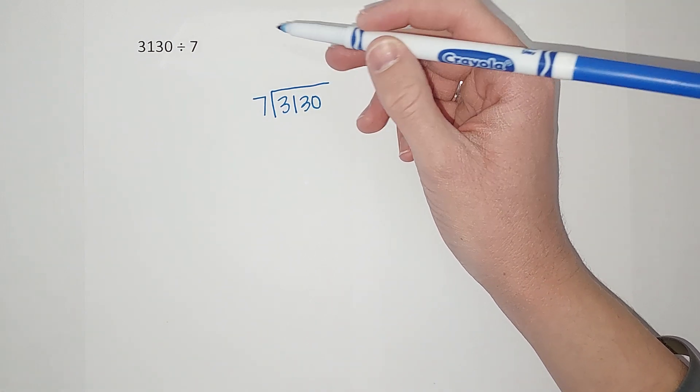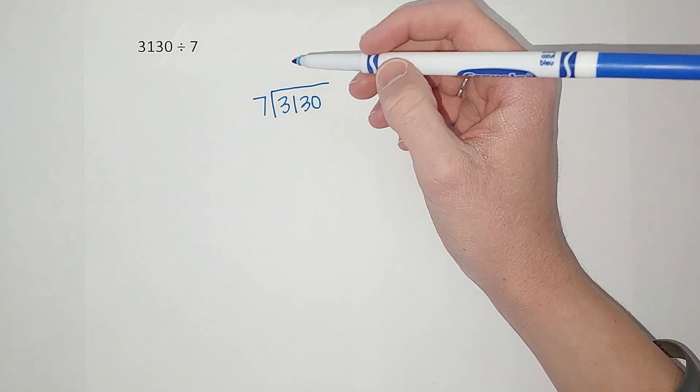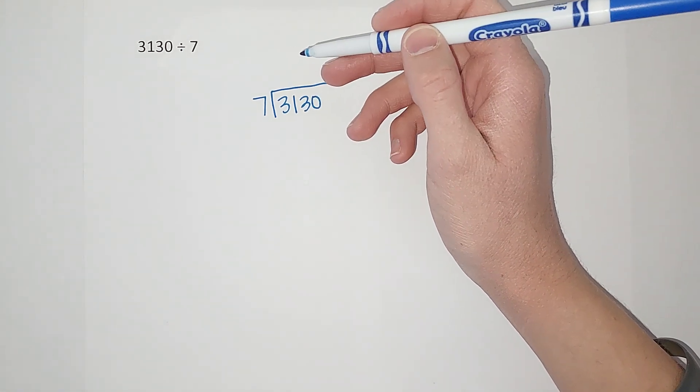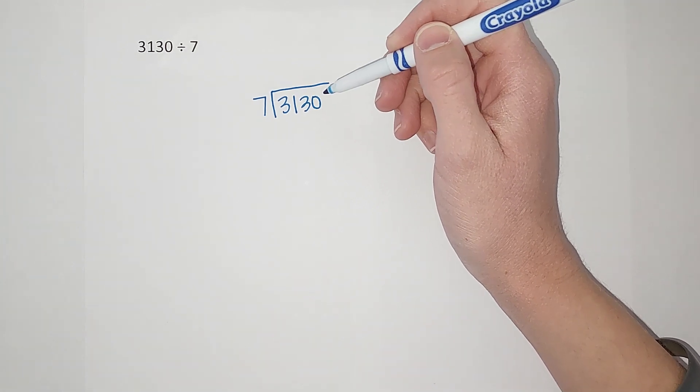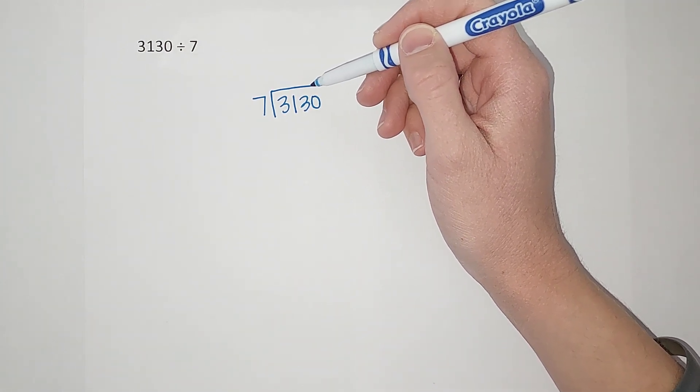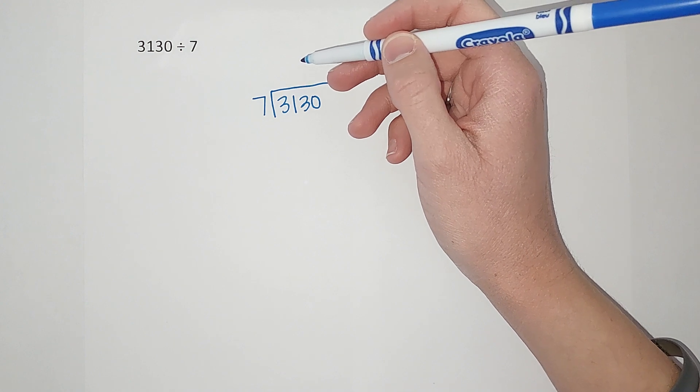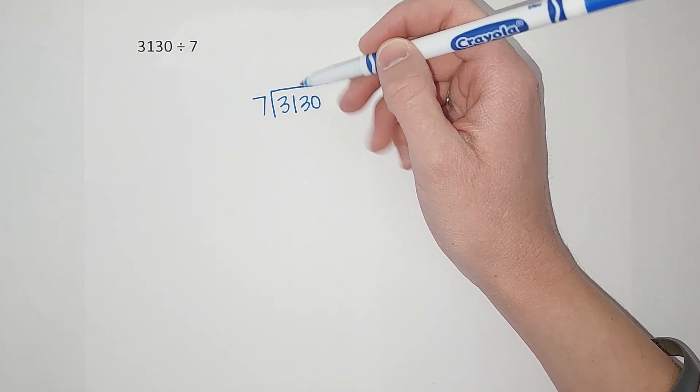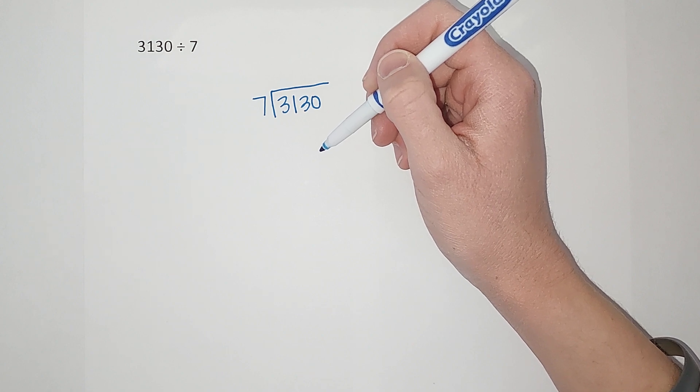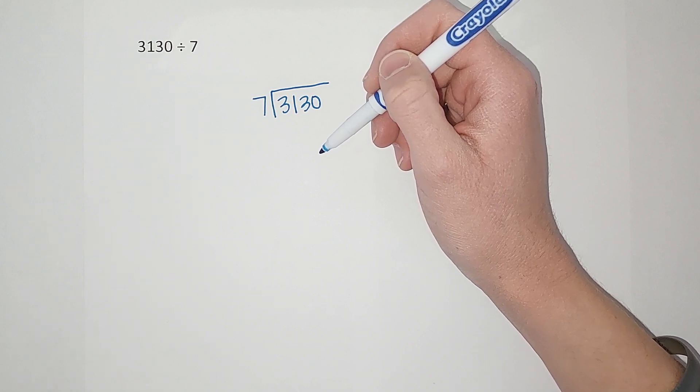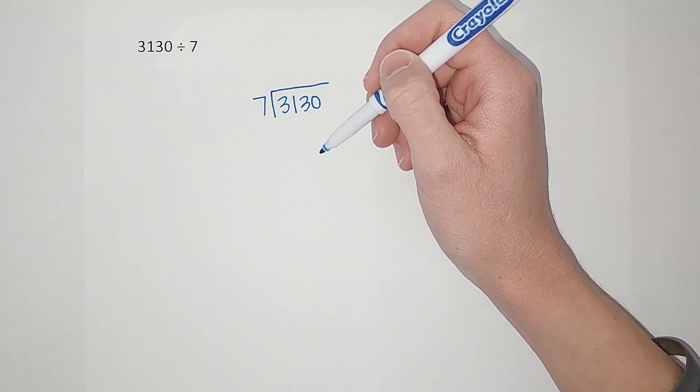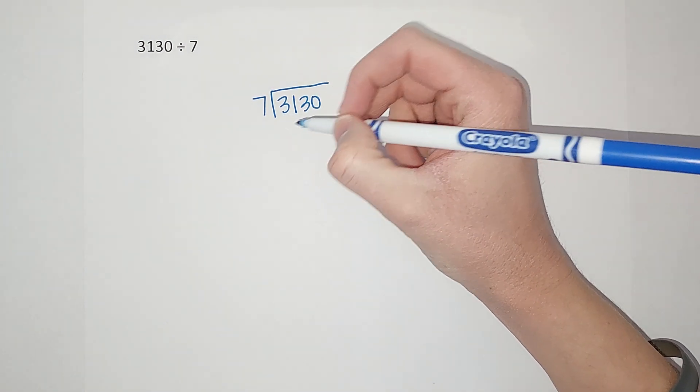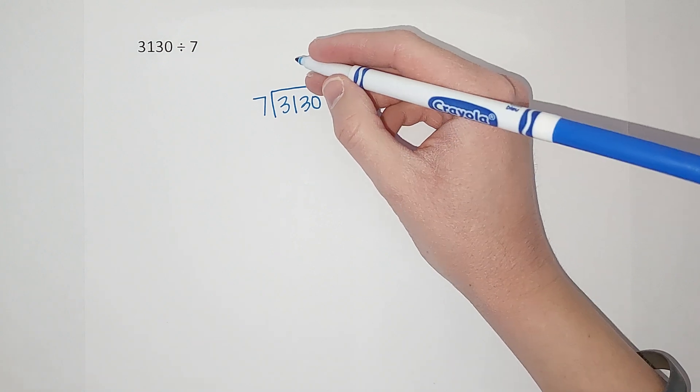So I'm like, okay, seven times a hundred is seven hundred, right? That's not near big enough. Seven times a thousand is seven thousand, which is too big. So then I think, okay, seven times two hundred would give me fourteen hundred. That's getting closer. Seven times three hundred would give me twenty one hundred, or seven times four hundred would give me twenty eight hundred. Oh, that's getting pretty close, so let's do that.